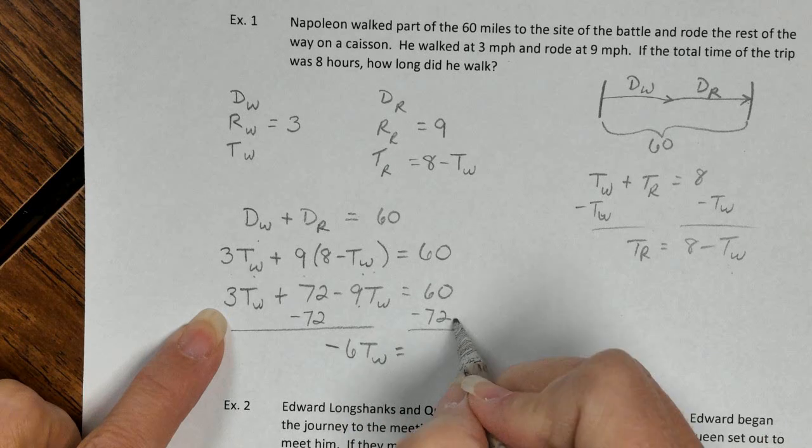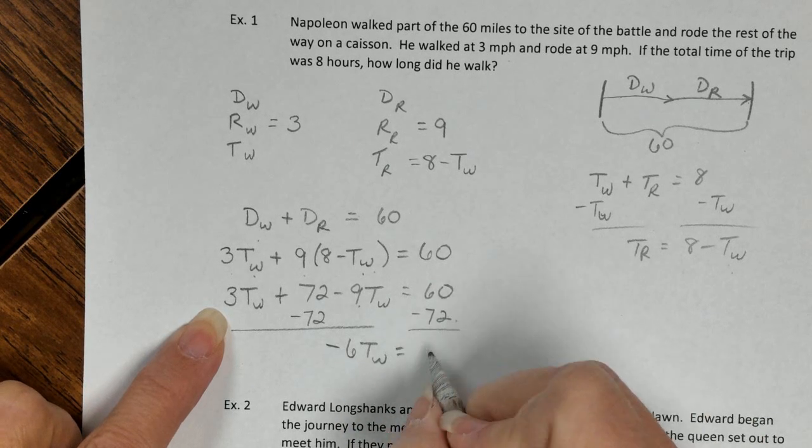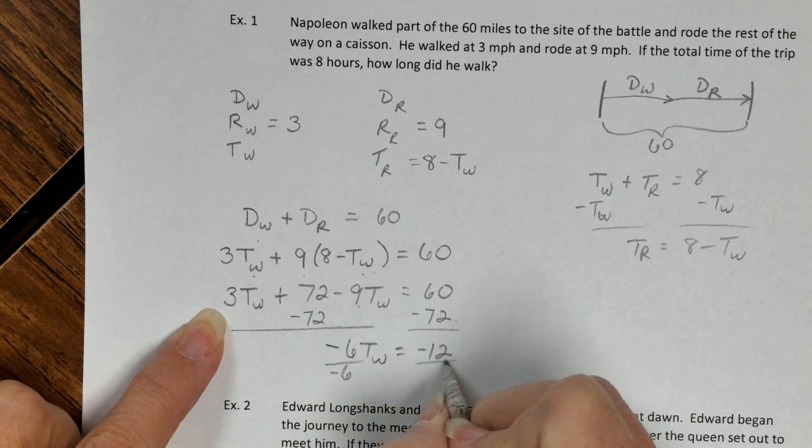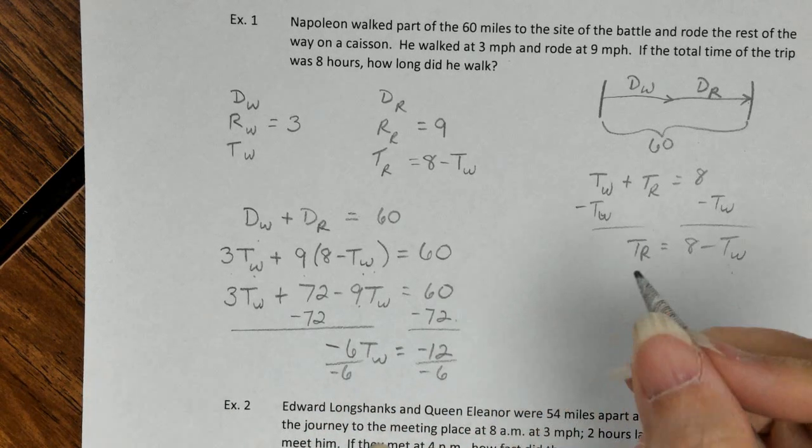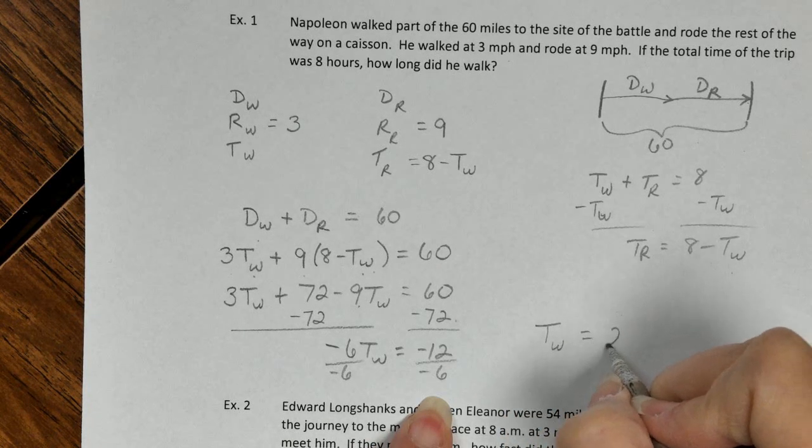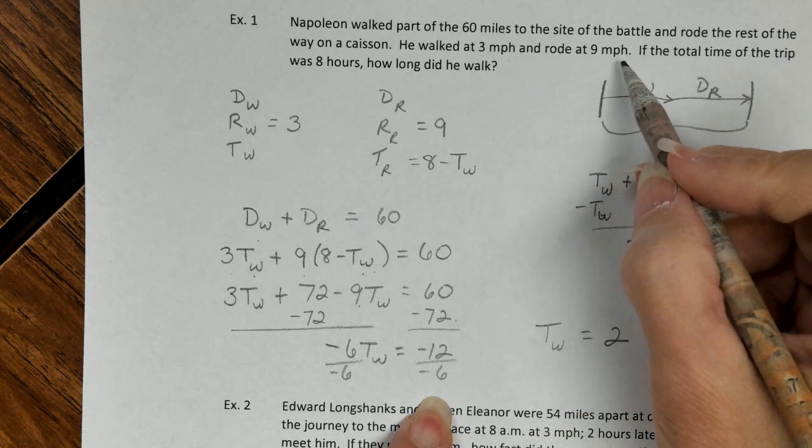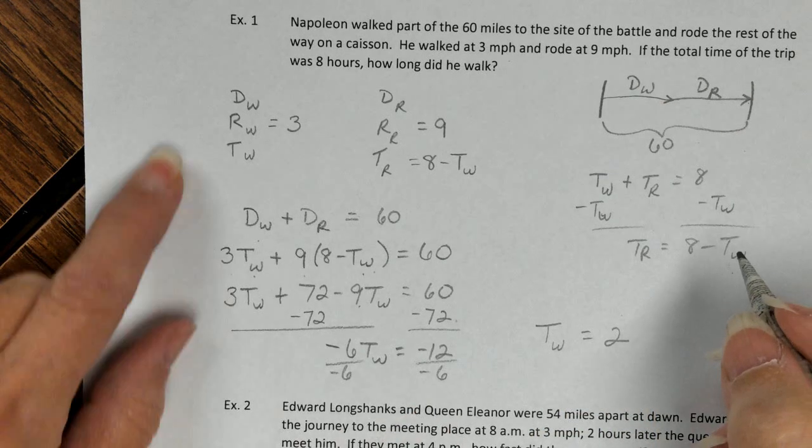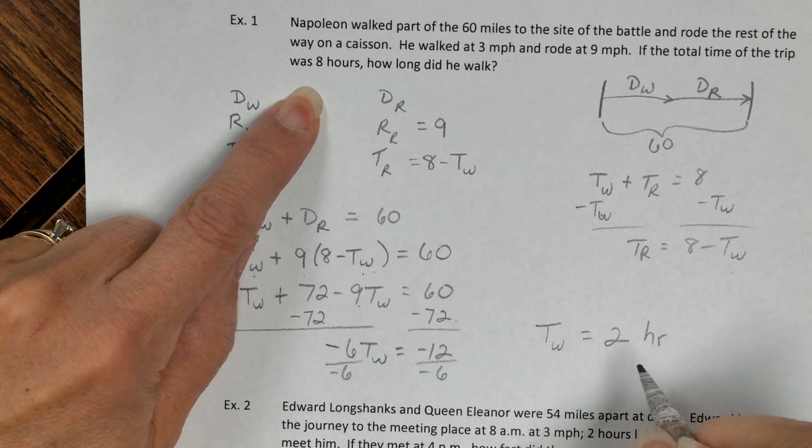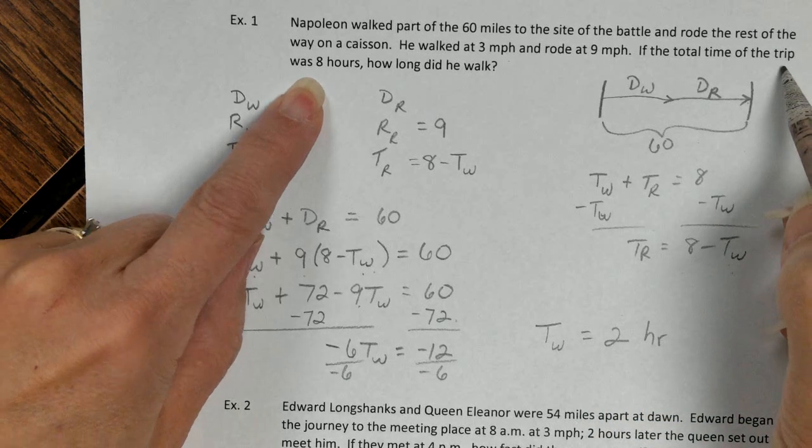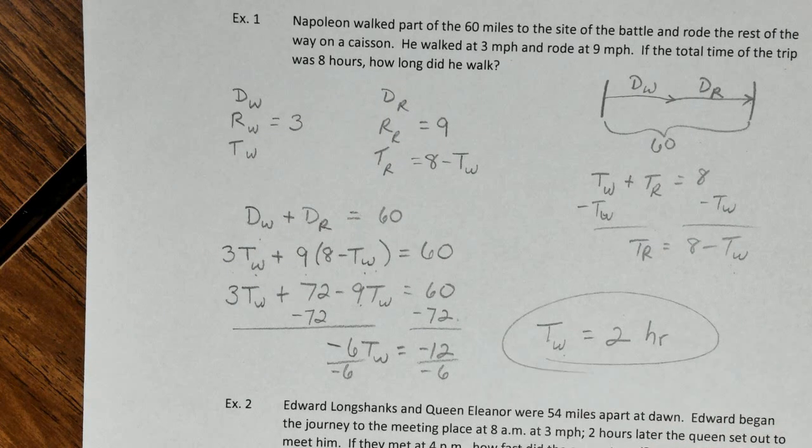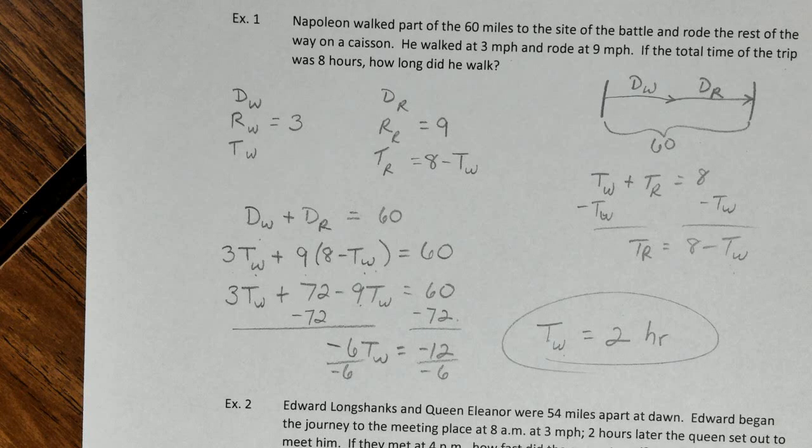And over here we're getting negative 12. And when we divide both sides by the coefficient of the variable, we get that the time walking is 2. I look back up here, they were talking about miles per hour, total trip was 8 hours, so this is 2 hours. Reread the question just to make sure. How long did he walk? That's his time walking. So that's the answer to the question. We are done with that.